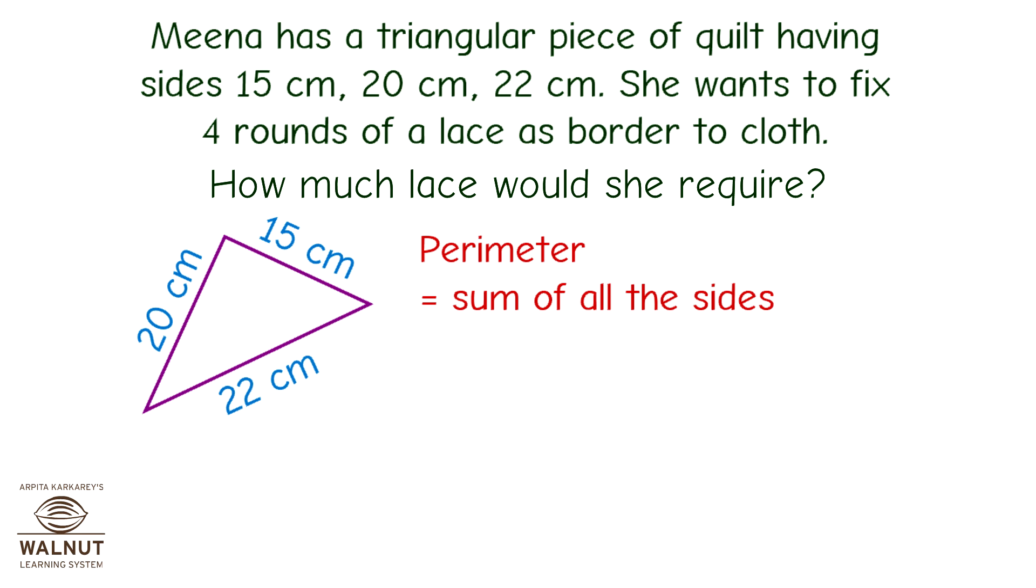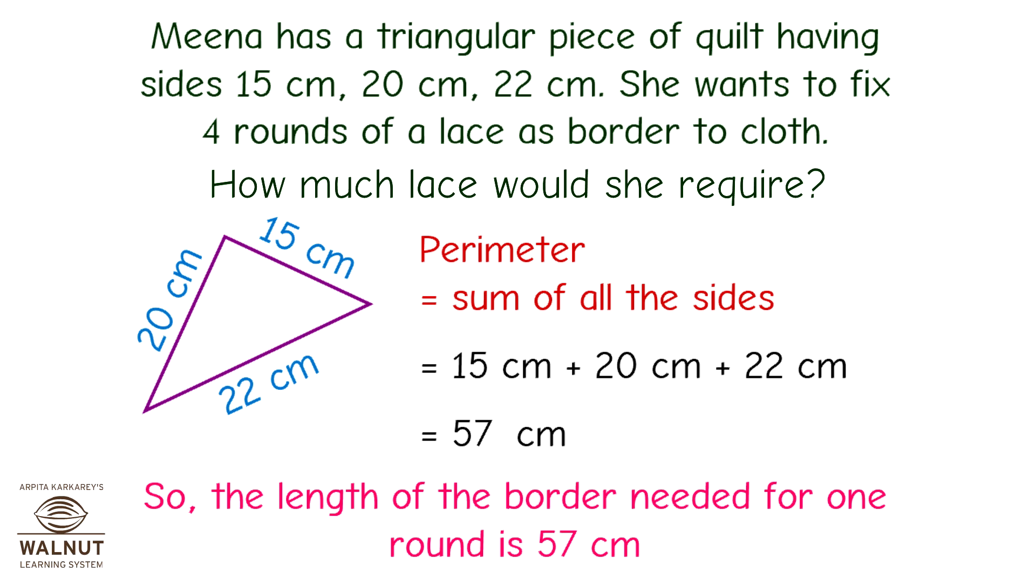Perimeter is equal to sum of all the sides. That is equal to 15 centimeters plus 20 centimeters plus 22 centimeters. That is equal to 57 centimeters. So, the length of the border needed for one round is 57 centimeters.